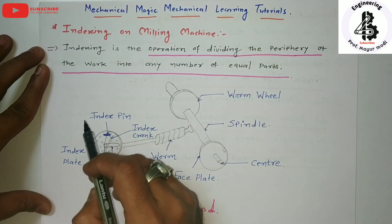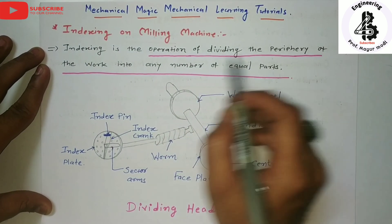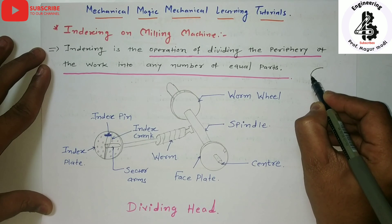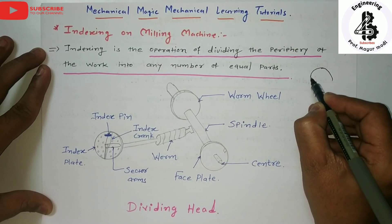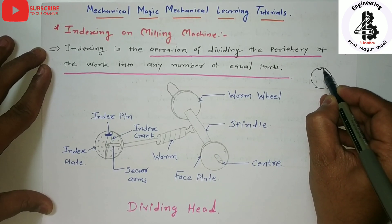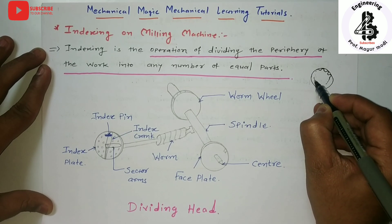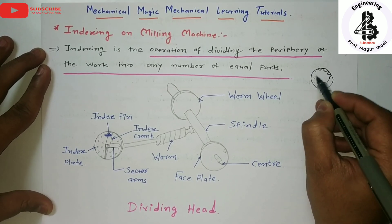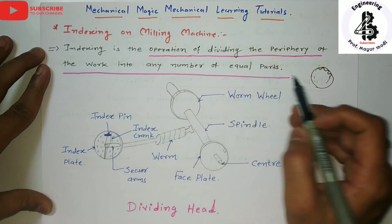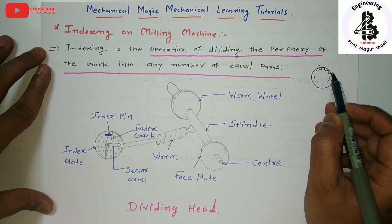Basically, the indexing mechanism is used for the operation of dividing the periphery of the work into any number of equal parts. Suppose I have a gear blank and I need to make a gear — I need to divide all the periphery into equal number of parts. So the indexing mechanism is used for dividing the periphery of a gear blank into the required equal number of parts.